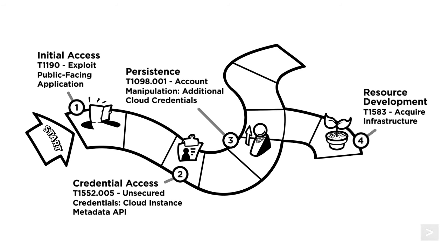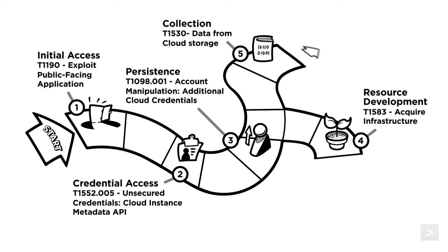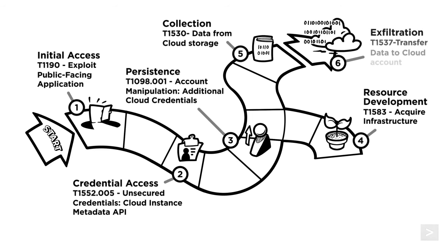Or increase their army of botnets — all from the comfort of someone else's cloud network. Of course, exploiting the infrastructure for their benefit is not the worst thing they could have done with their elevated permissions. They could have expanded their discovery and lateral movement tactics with the ultimate goal of collecting and exfiltrating confidential data.